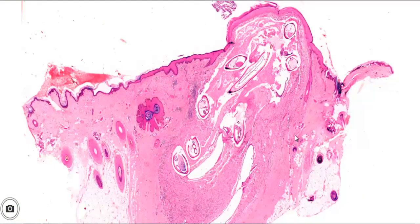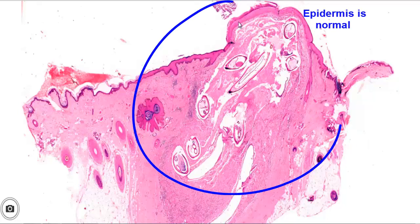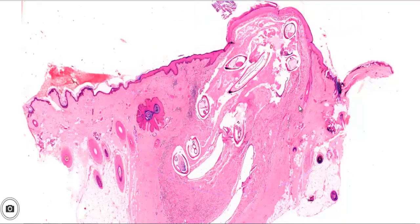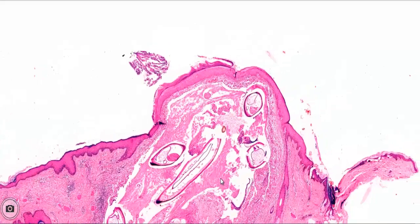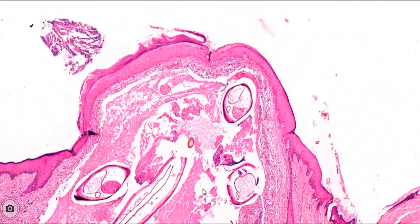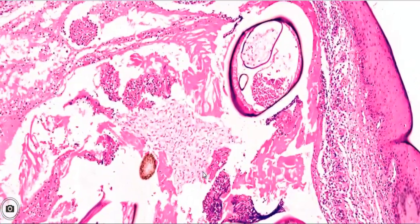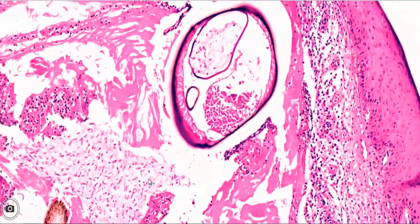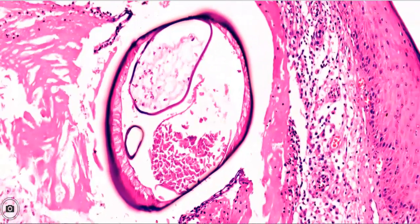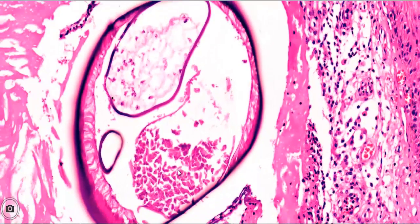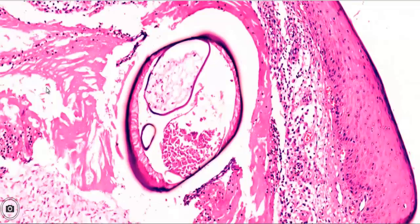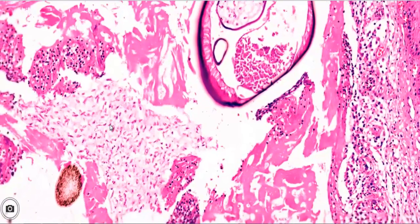Here we see that the epidermis is normal, and under the epidermis is a nodular lesion which is surrounded by fibrous tissue all around — a fibrous capsule — and inflammatory cells. Within the lesion, we see cross sections of many parasitic structures with fibrinopurulent exudate. Here we see a cross section of the gravid worm with two uteri filled with microfilariae. The characteristic microfilariae of this worm fill the gravid uterus; the uteri are generally bi-paired.